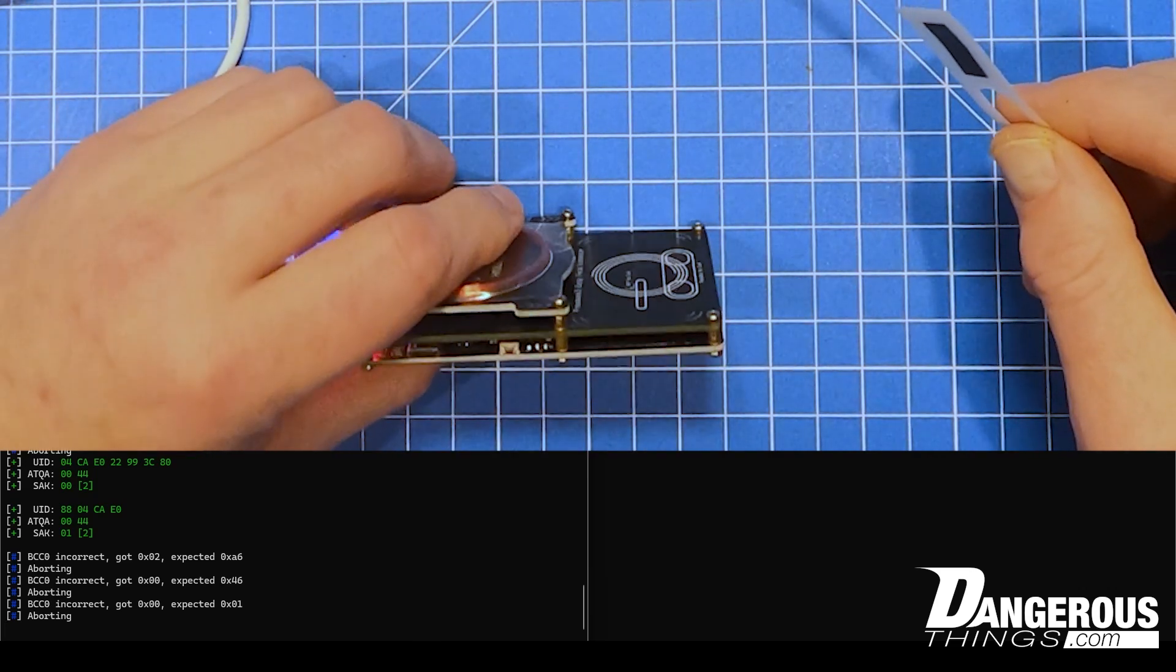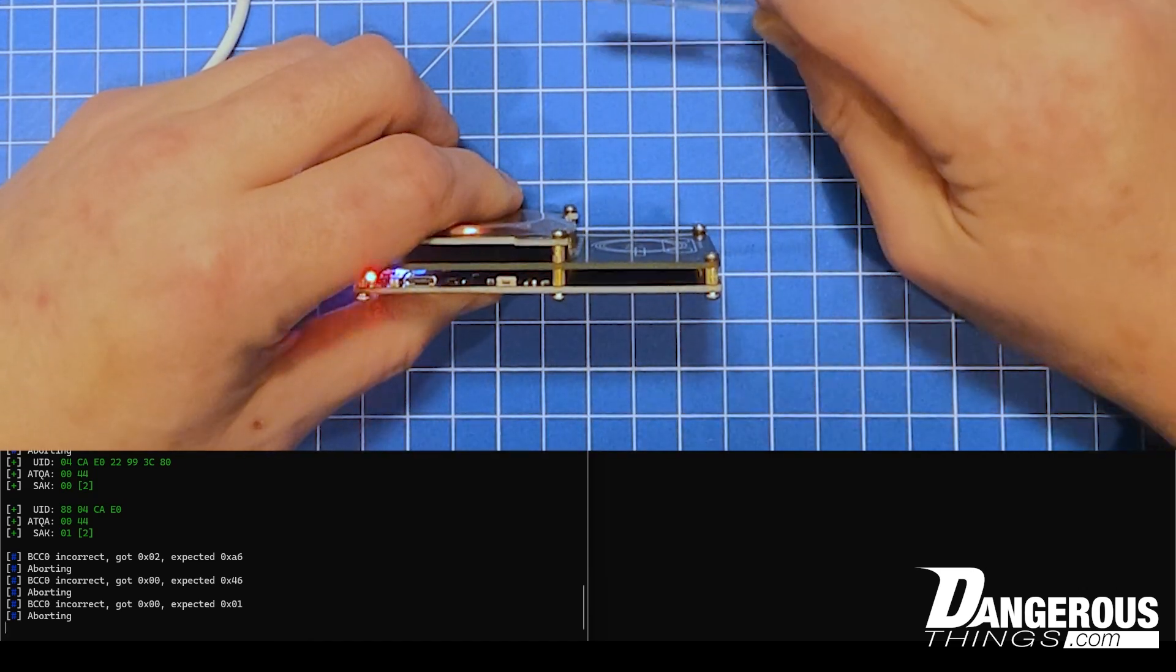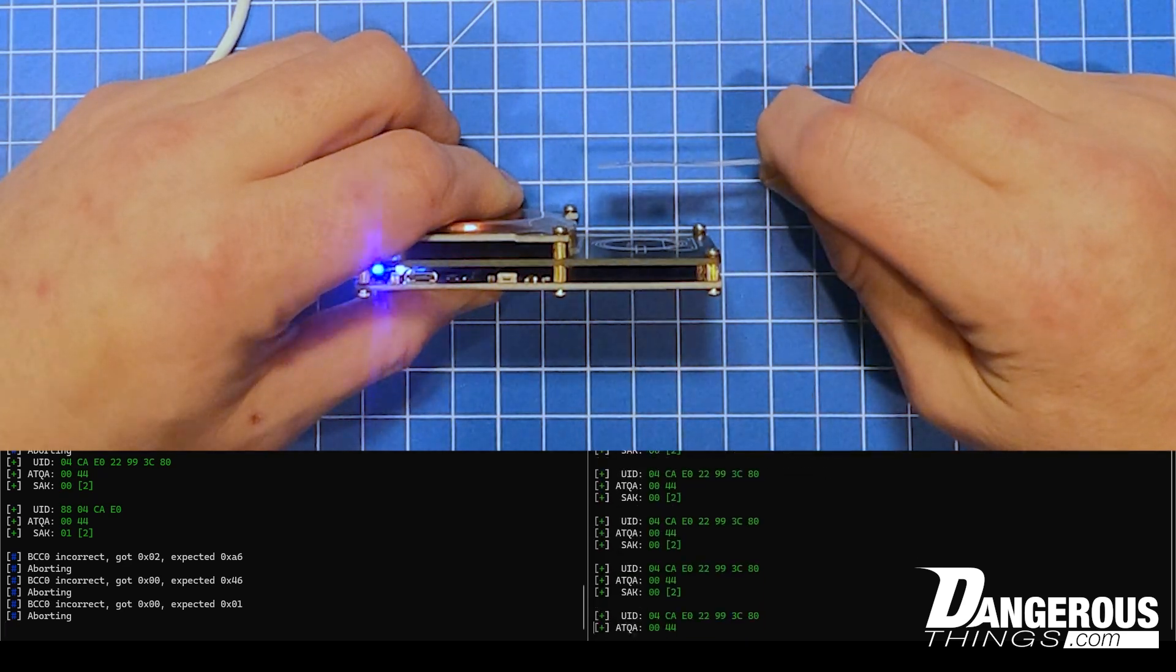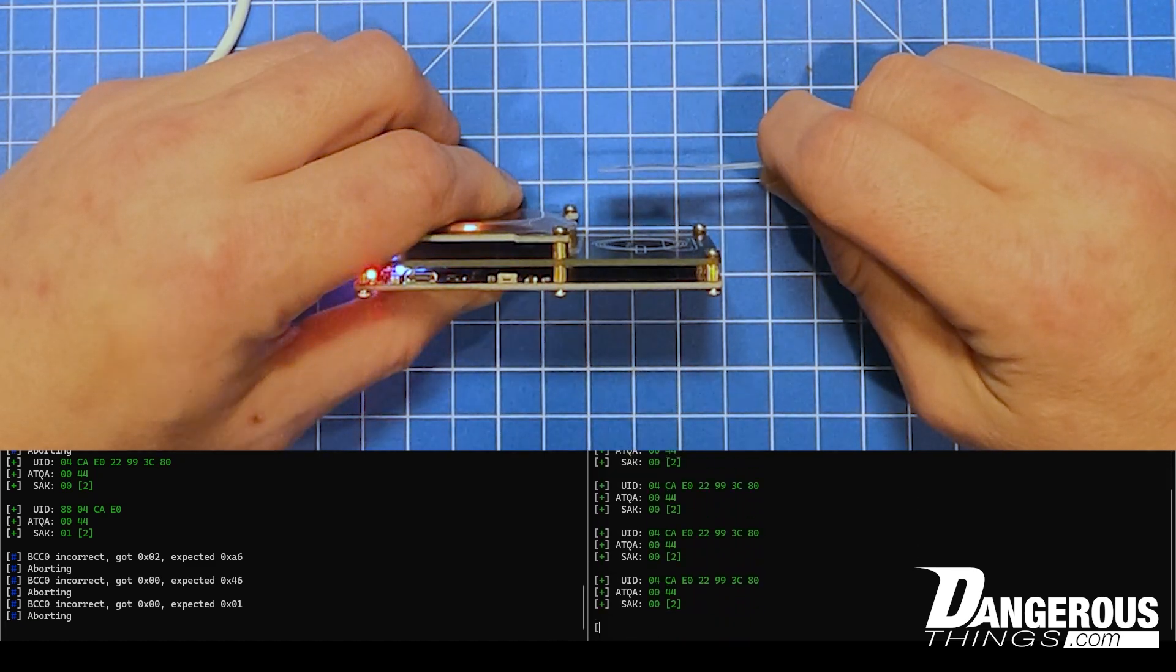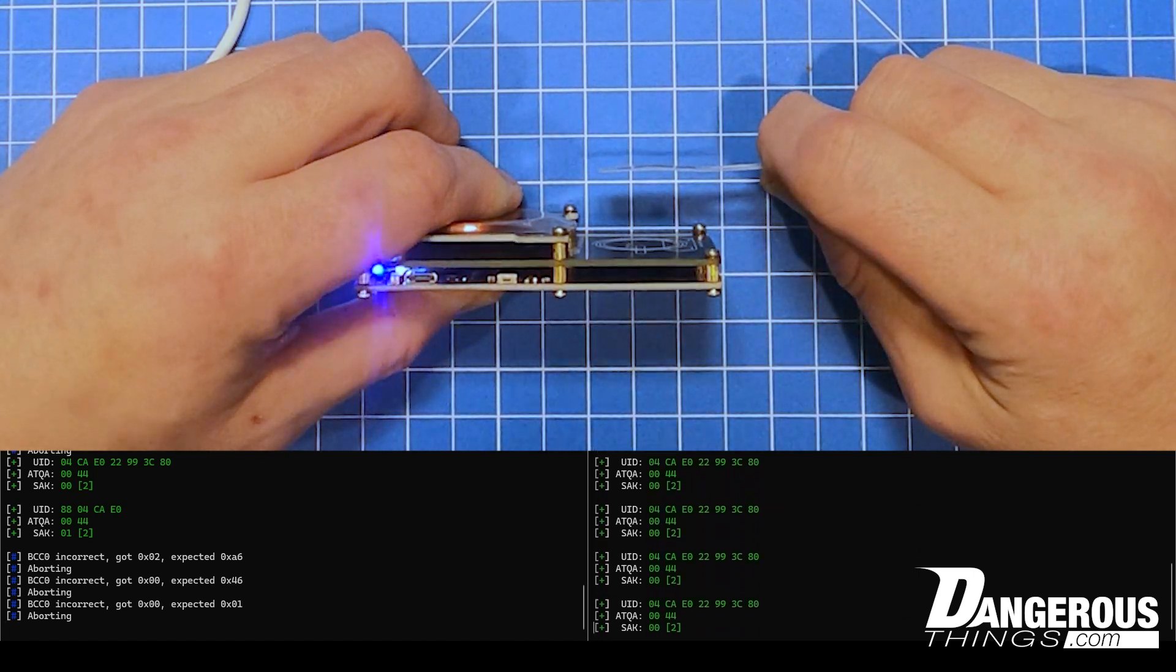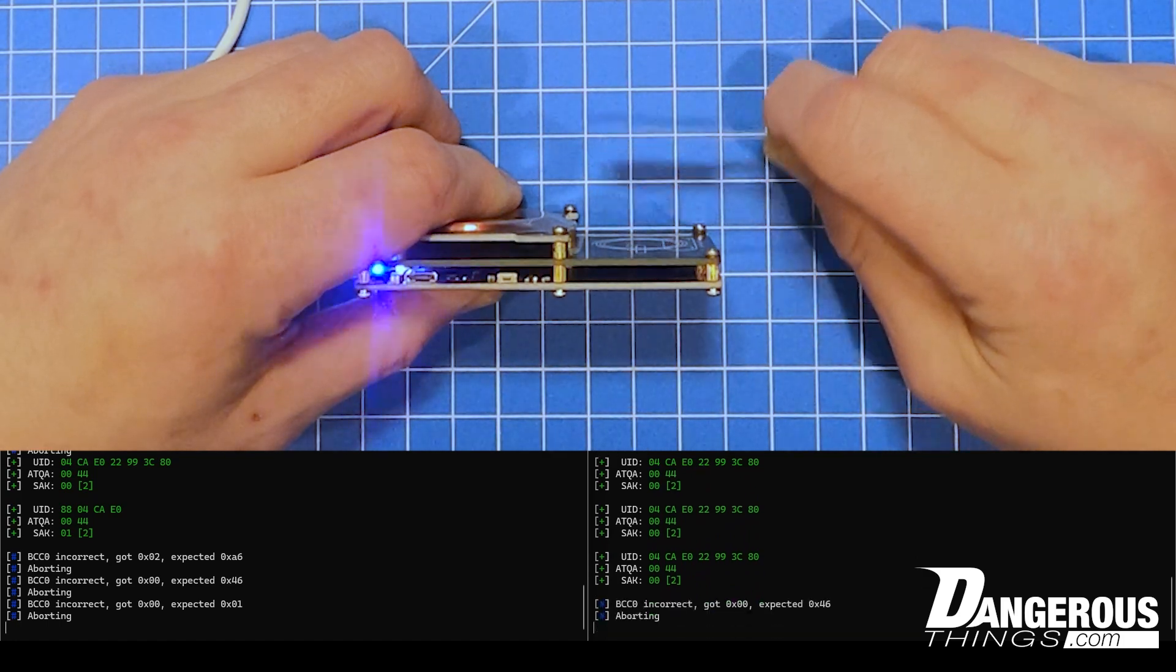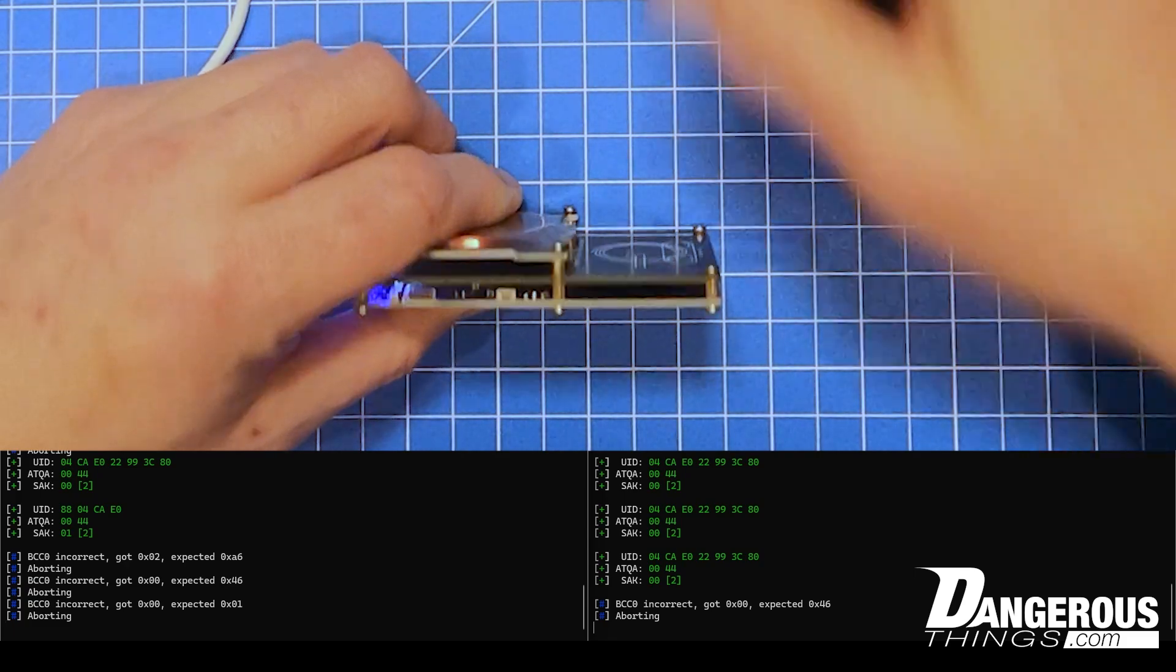Let's take a look at what we get with the booster board installed. Again, we're going to approach it dead center and we're getting reads way out here. That's well over, I would say it's close to two centimeters. Unfortunately the markings on my mat are imperial, those are half inch marks, but pretty close to centimeters. That is a dramatic improvement. The booster board really does work.